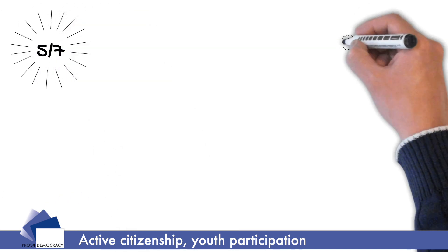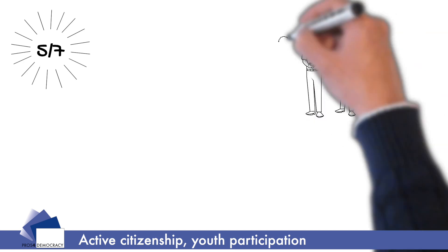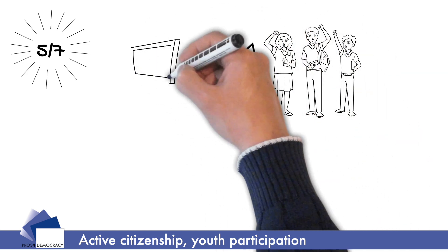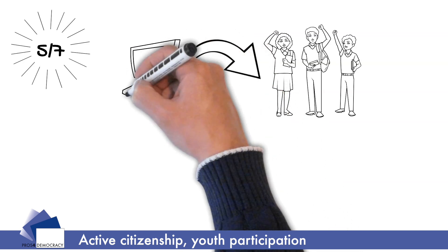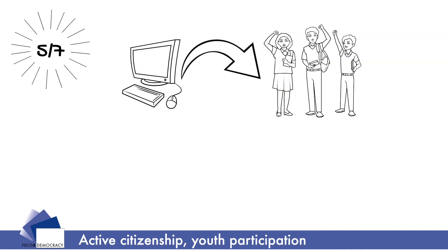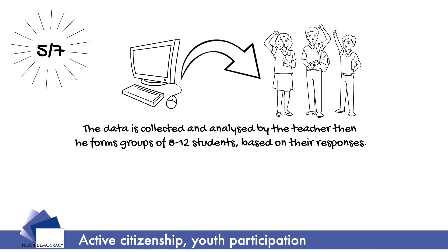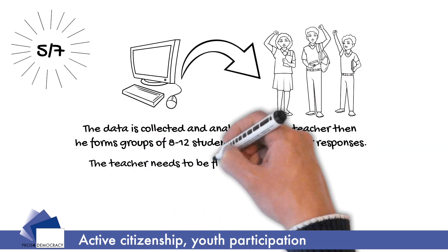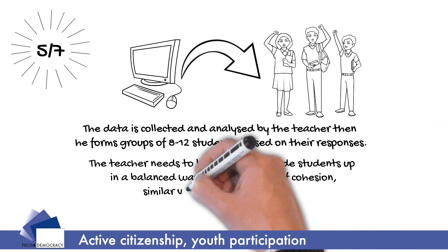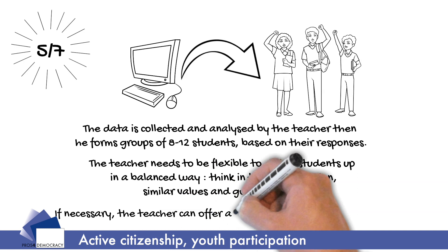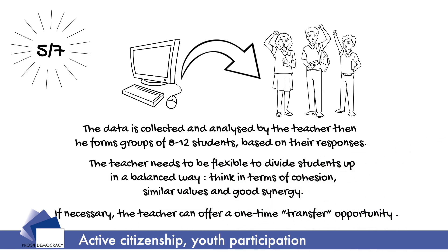The data is collected and analyzed by the teacher to aid in dividing students into groups of 8 to 12 based on their responses. The teacher needs to be flexible to divide students in a balanced way that promotes group cohesion. Members of the same group should ideally share the same values and thus work better together. If necessary, the teacher can offer a one-time transfer opportunity for students who wish to change groups at a later stage.